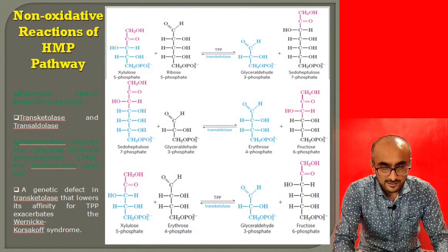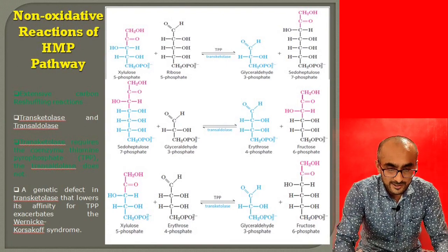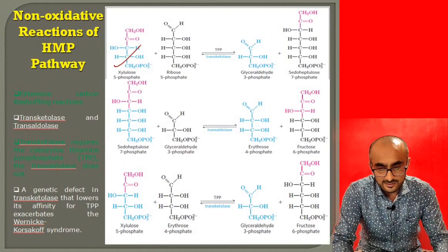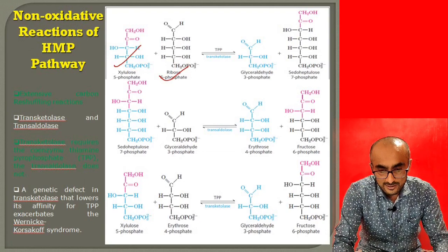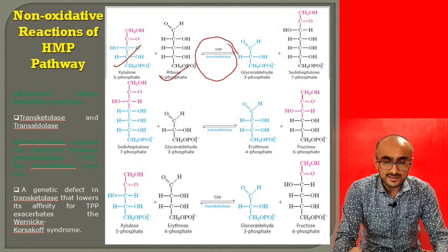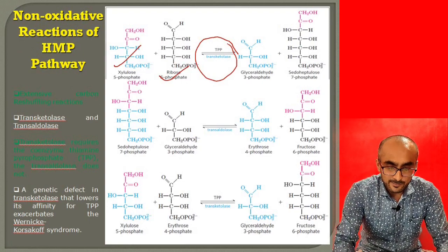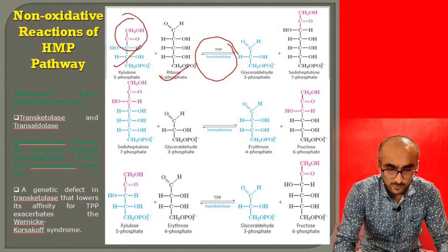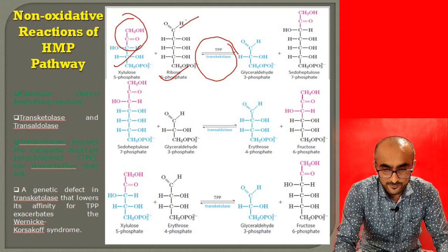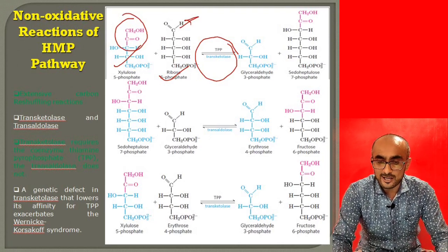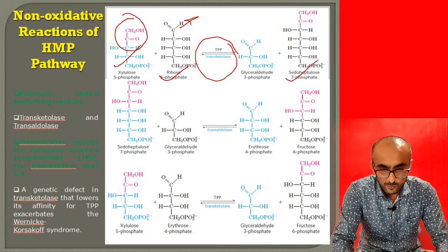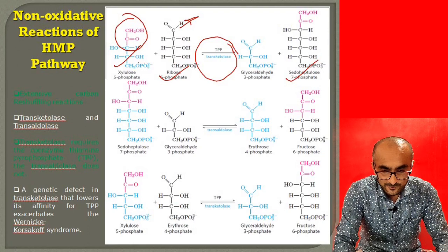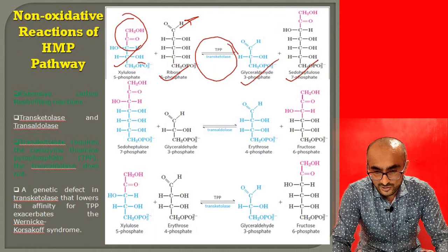In the non-oxidative phase, one molecule of xylulose-5-phosphate reacts with ribose-5-phosphate, catalyzed by the enzyme transketolase. Transketolase transfers a two-carbon fragment from xylulose-5-phosphate to ribose-5-phosphate, producing the seven-carbon sugar sedoheptulose-7-phosphate, while the leftover from xylulose-5-phosphate forms glyceraldehyde-3-phosphate.